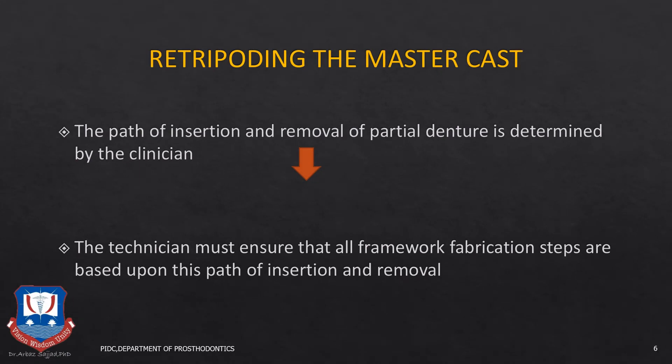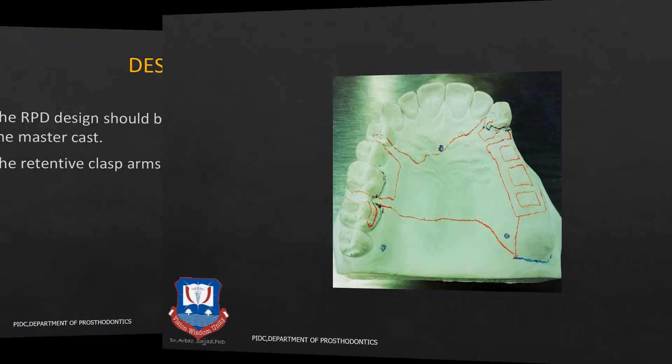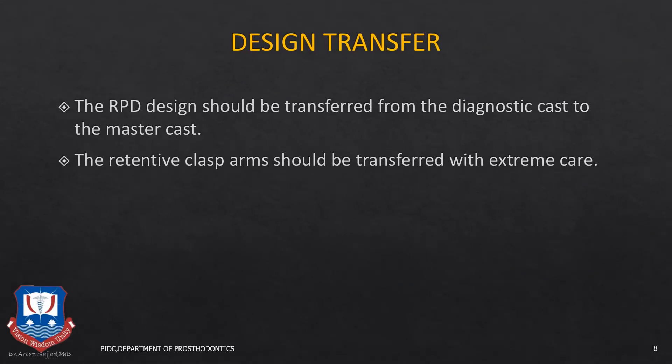For the application, the master cast is again re-tripoded on the surveyor to re-ensure the path of insertion that was previously determined or chosen on the diagnostic cast by the clinician. Then the design is transferred and the technician should ensure that whatever designing or waxing of the framework is done on this master cast follows the path of insertion that was chosen initially. The design is drawn on the diagnostic cast and then transferred on the master cast, and we need to ensure that the clasp assembly, especially the retentive clasp arm, is transferred in the same way as intended, because this would ultimately ensure the retention of the RPD framework.